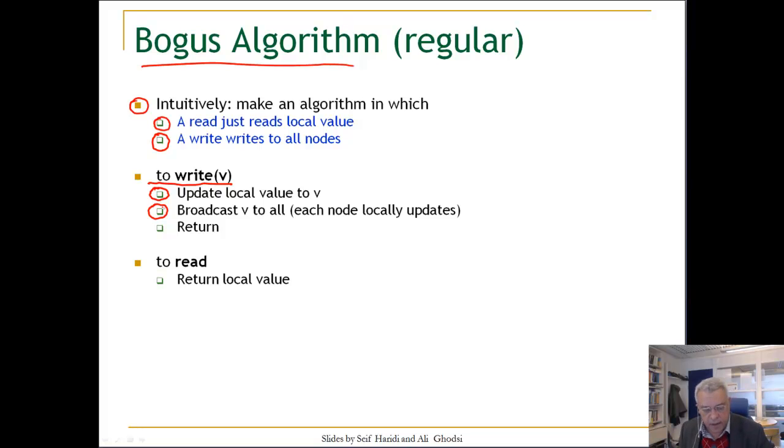As long as this node is alive, it is guaranteed that the broadcast message will be delivered, and then you immediately return. That is the write operation. Whenever a broadcast message is delivered to a node, the node updates the value locally. To read, you just read the local value. This algorithm is not correct.